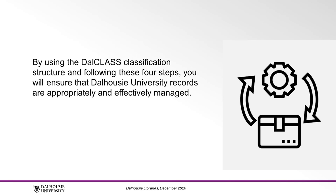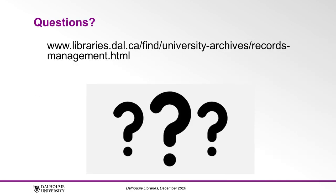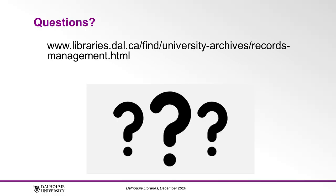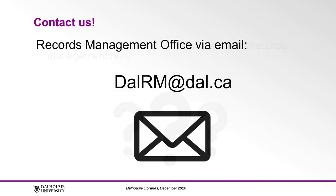By using the Dal class classification structure and following these four steps, you will ensure that Dalhousie University records are appropriately and effectively managed. If you have questions related to records management at Dalhousie or for more information, consult the records management website at www.libraries.dal.ca/find/university-archives/records-management.html, where you can refer to the policy, proper procedures, and helpful tools like Dal class. You can also contact the records management office via email at dalrm@dal.ca.